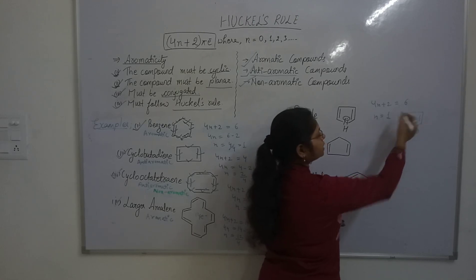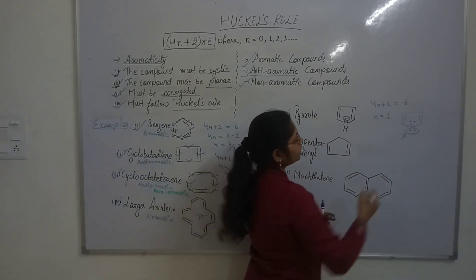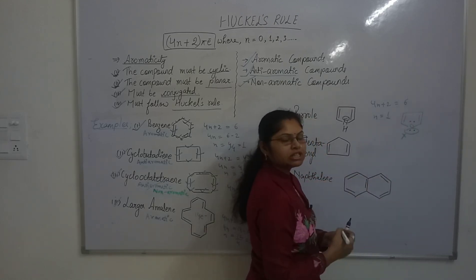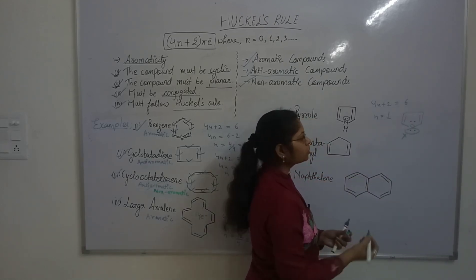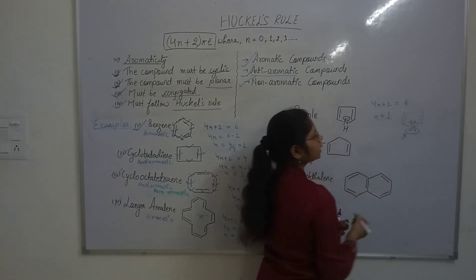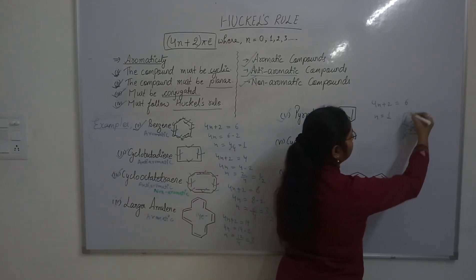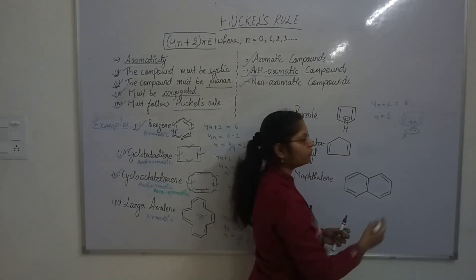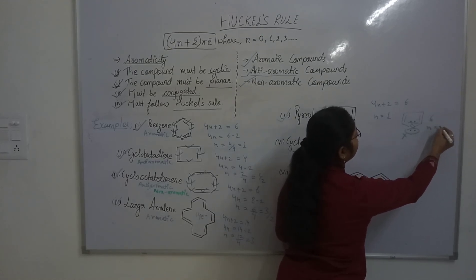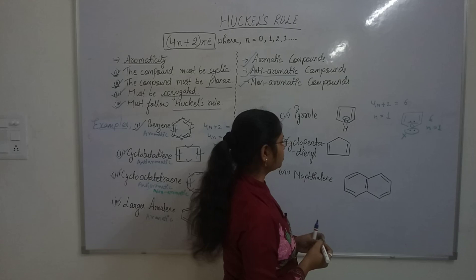Looking at furan: in furan, only one lone pair of oxygen takes part in conjugation. So there are 2 pi bonds giving 4 pi electrons, plus the 2 electrons from the lone pair involved in conjugation, for a total of 6 electrons involved in conjugation. Since n = 1, furan is also an aromatic compound.